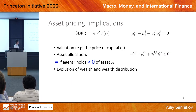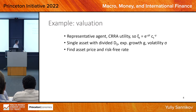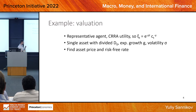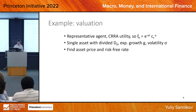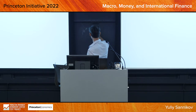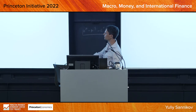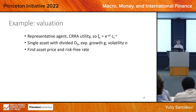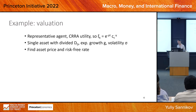I'm going to pause here and ask you to think about how you would personally approach and solve it. Can you use the asset-pricing relationship — mu_A plus mu_C plus sigma_A times sigma_C equals 0 — to answer this question: find the asset price and risk-free rate? I'll pause for about a minute, then show you how to do it.